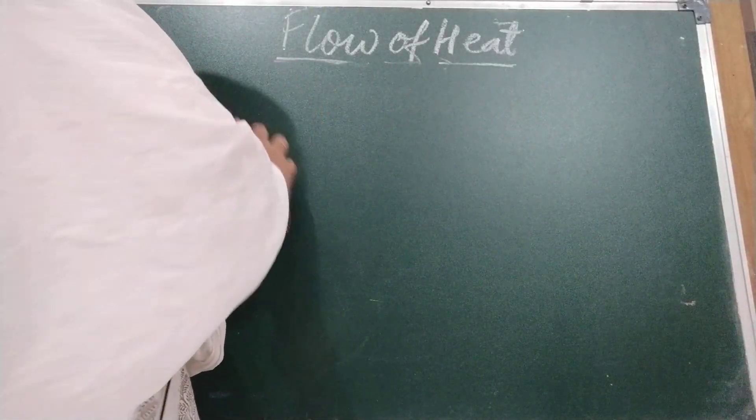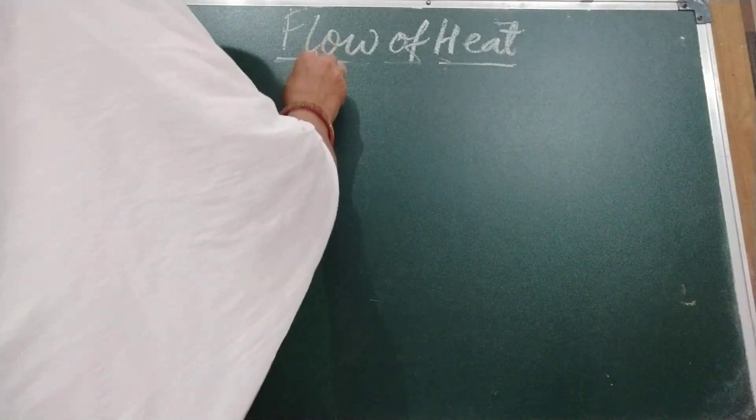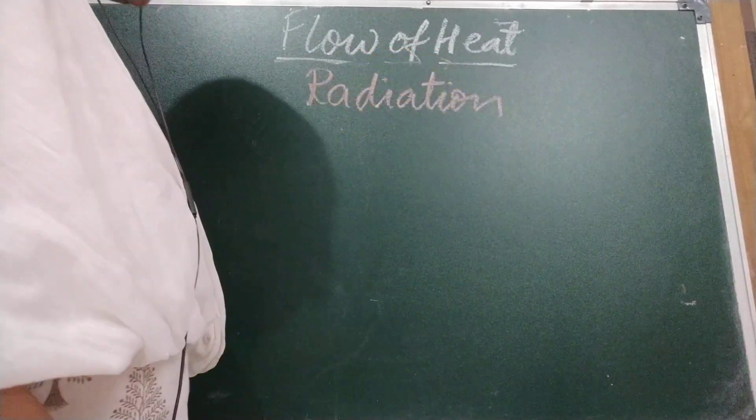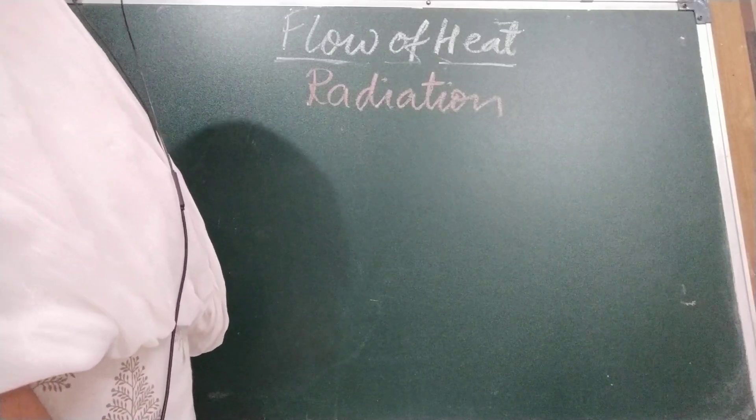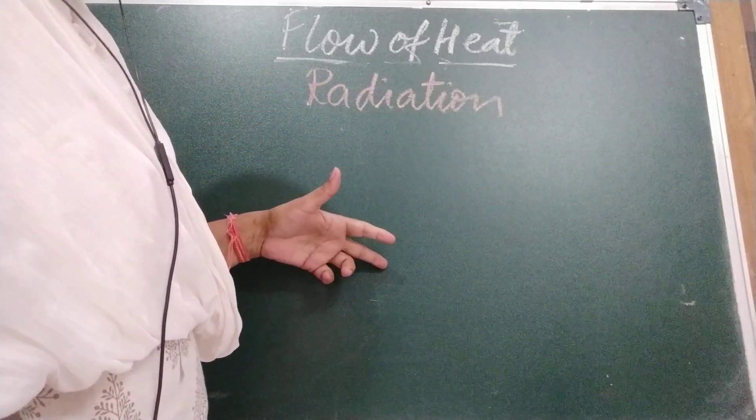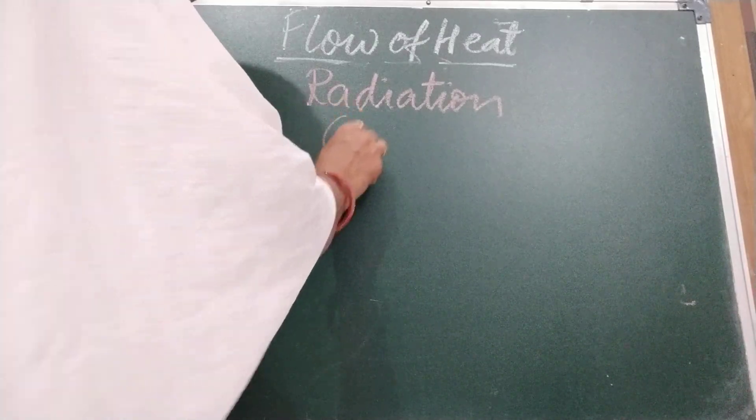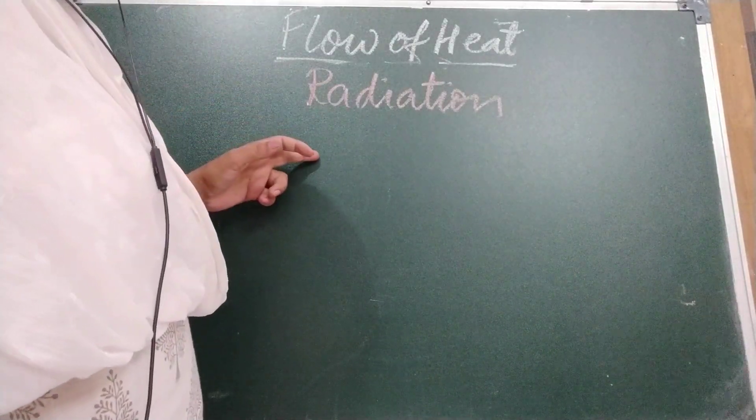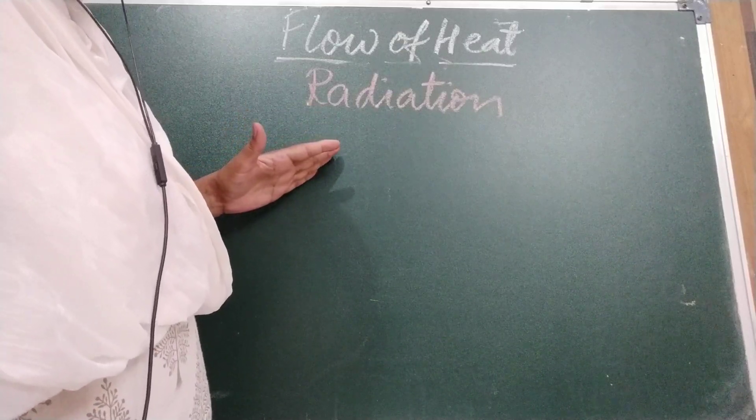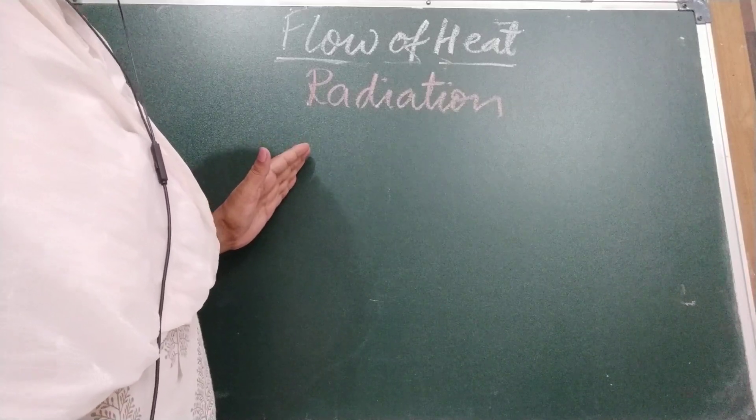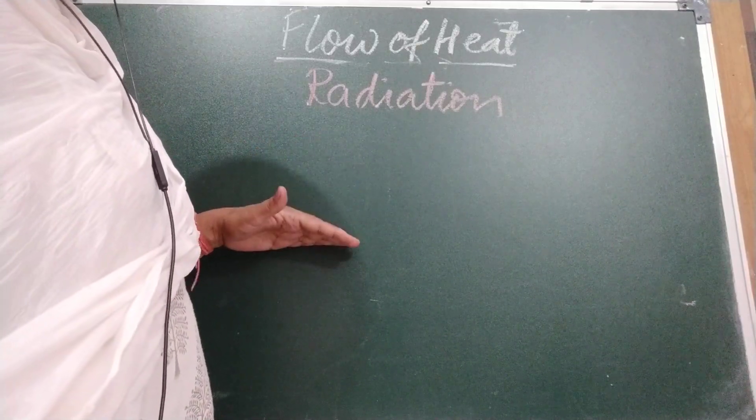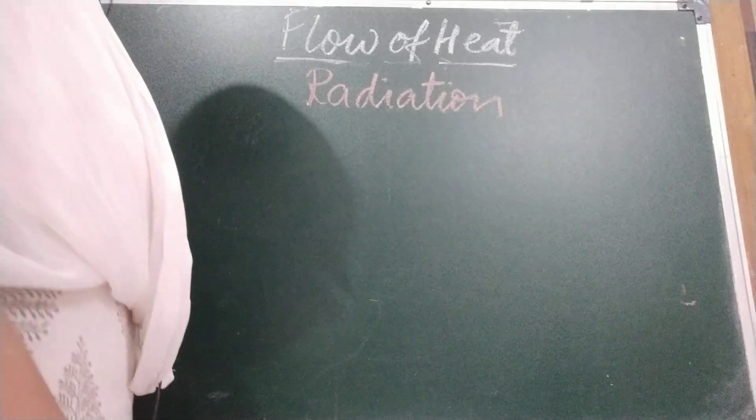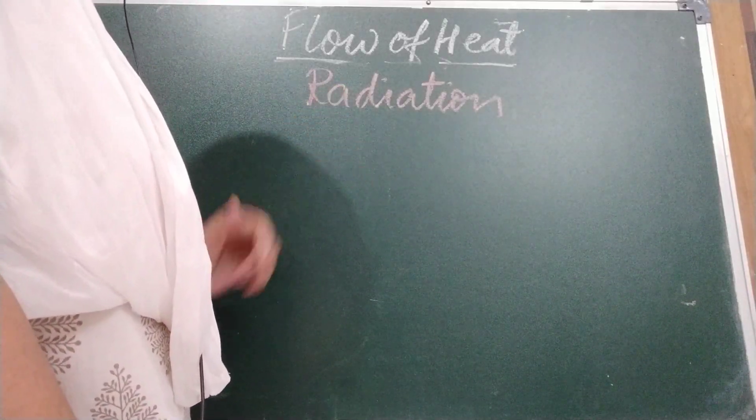Now next, we are going to discuss radiation. Radiation does not need any medium. There is another method by which heat reaches to us. This method is called radiation. Like sun, we get the heat of sun by radiation, by this method. This is radiation. The energy so transferred is called radiant energy. It does not need any medium to get transferred from the hot body to cold body. Like in case we have seen conduction and convection, they require medium like solid, liquid or gas.